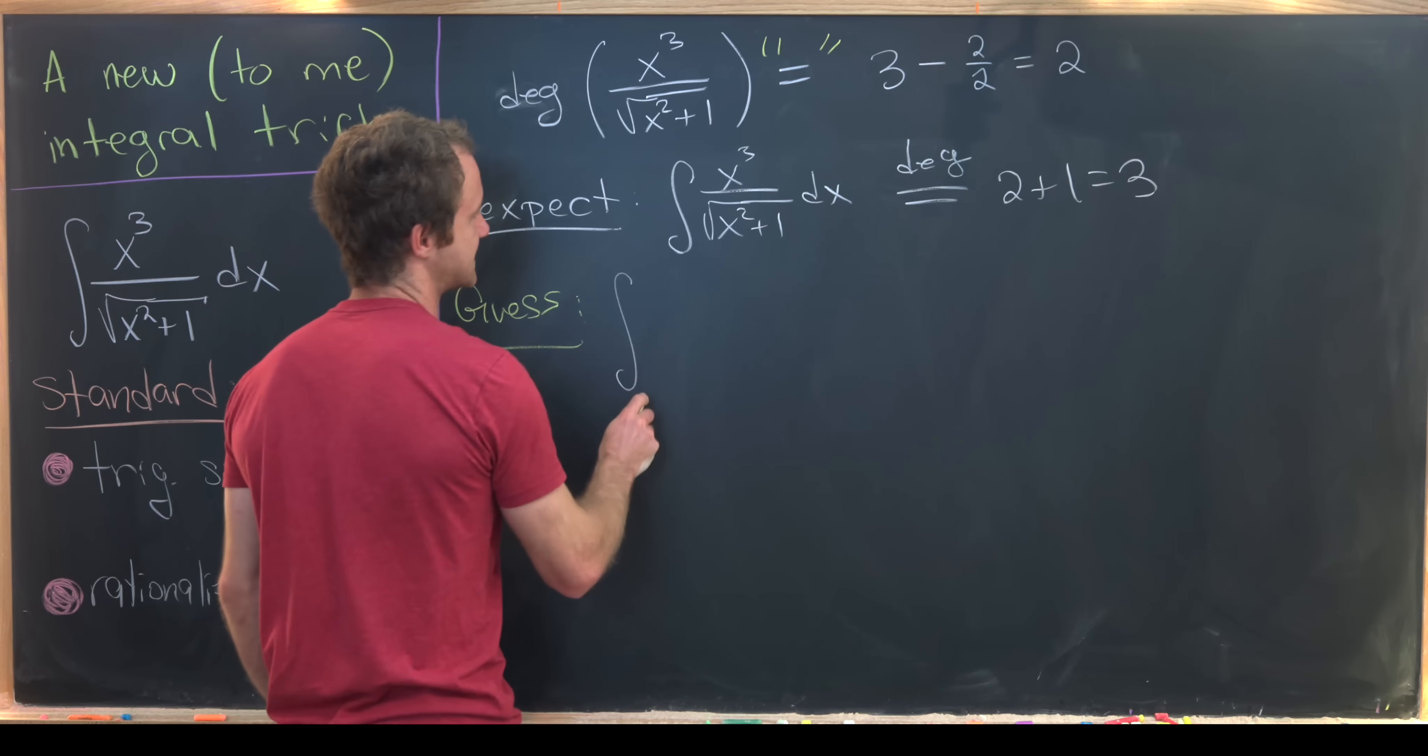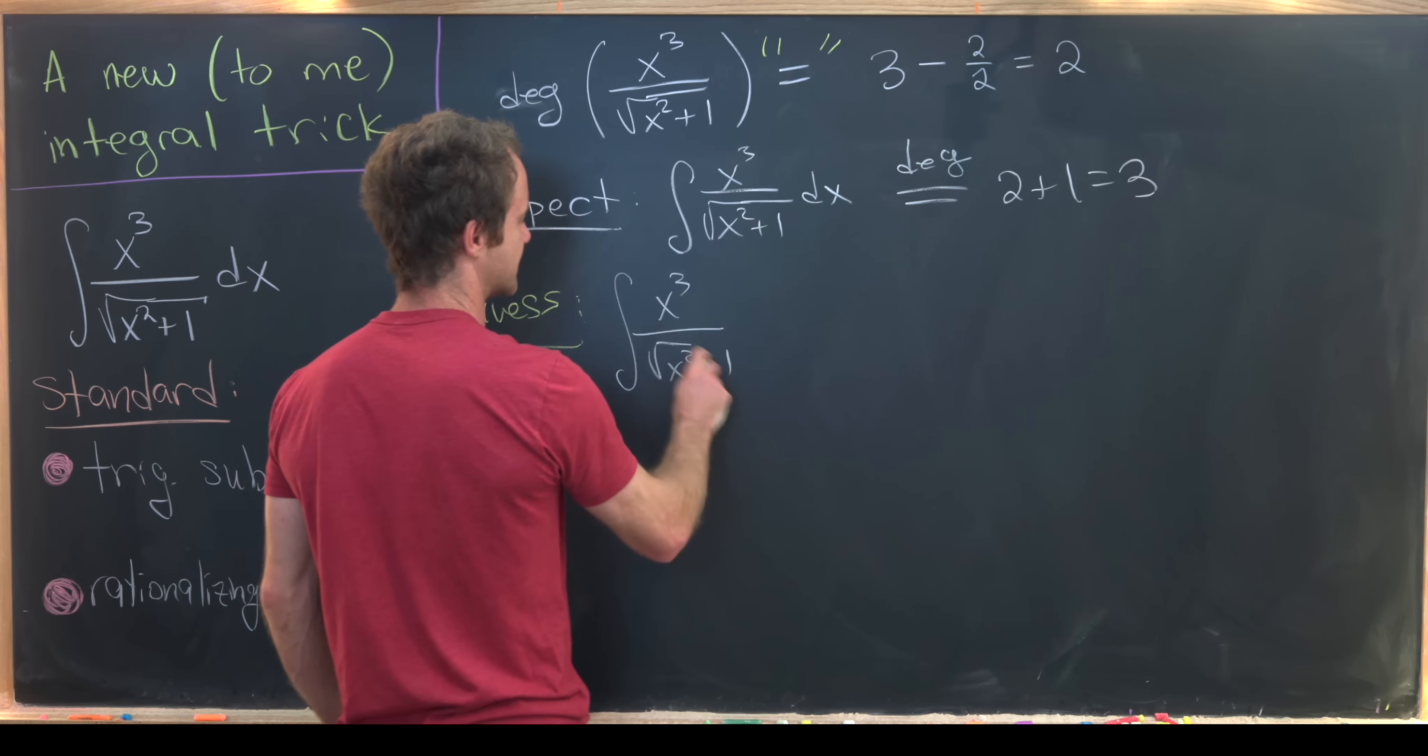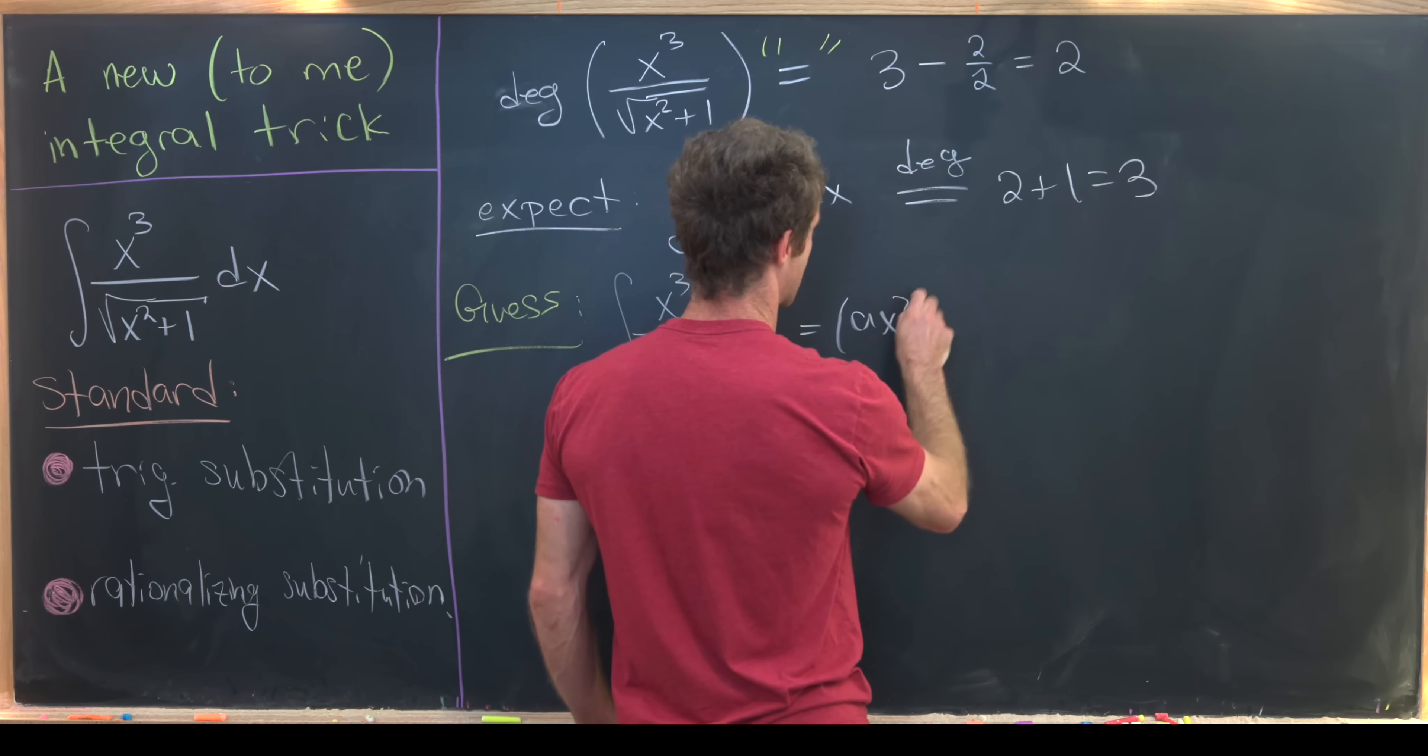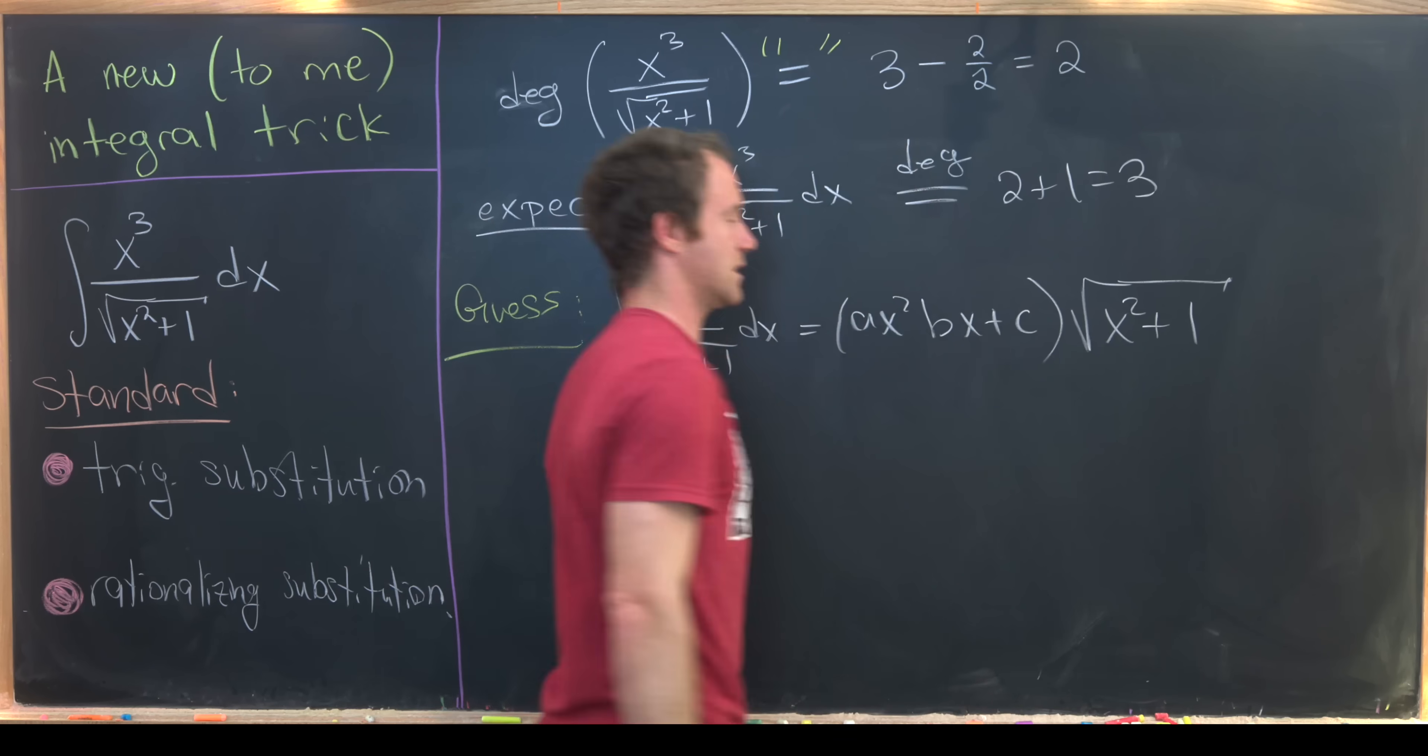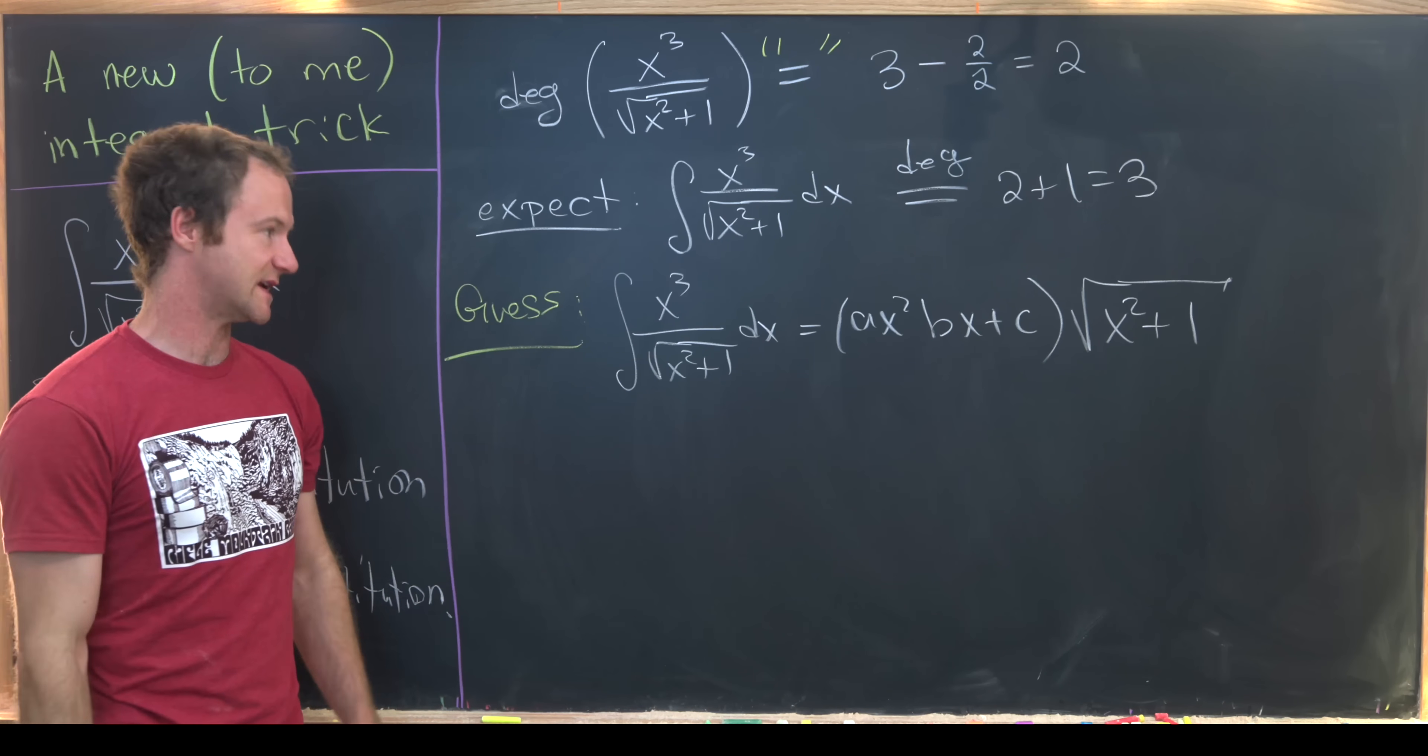Let's see what our guess is. So I'm going to guess that the antiderivative of x cubed over the square root of x squared plus 1 dx is equal to ax squared plus bx plus c times the square root of x squared plus 1.